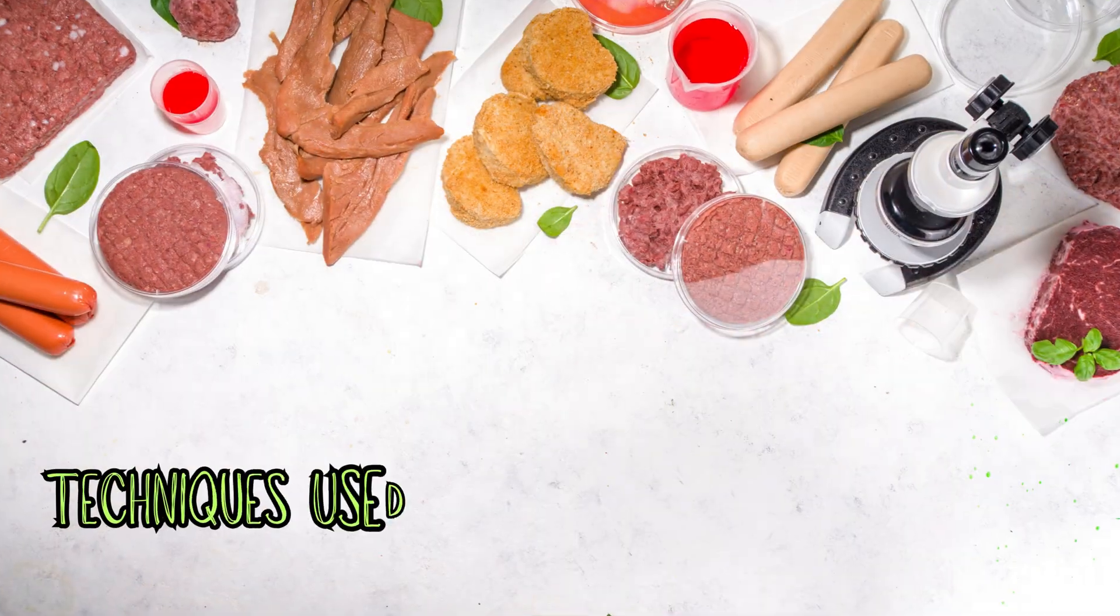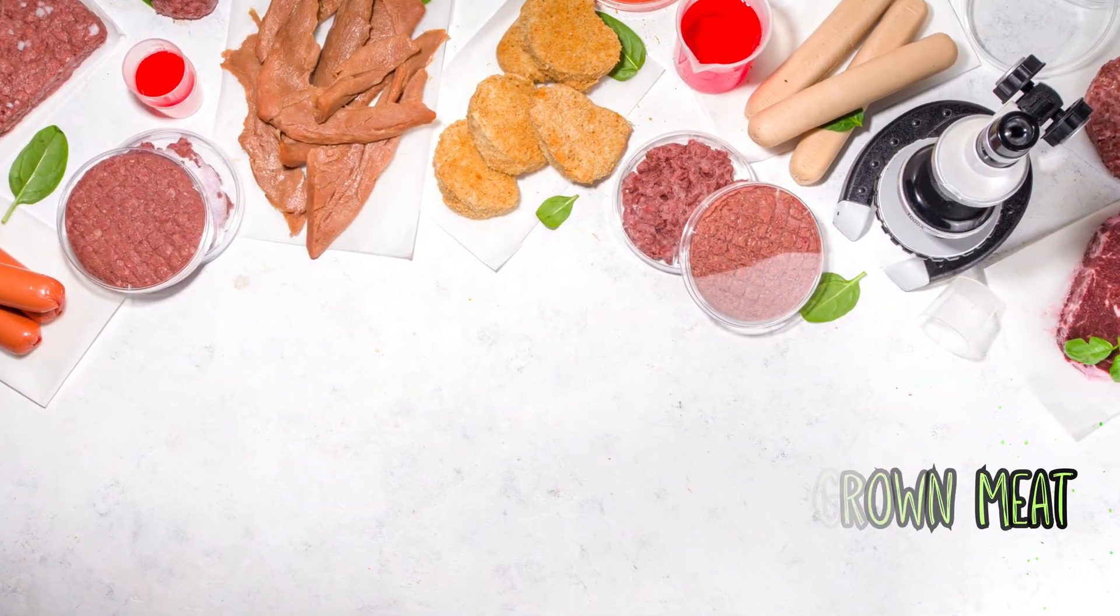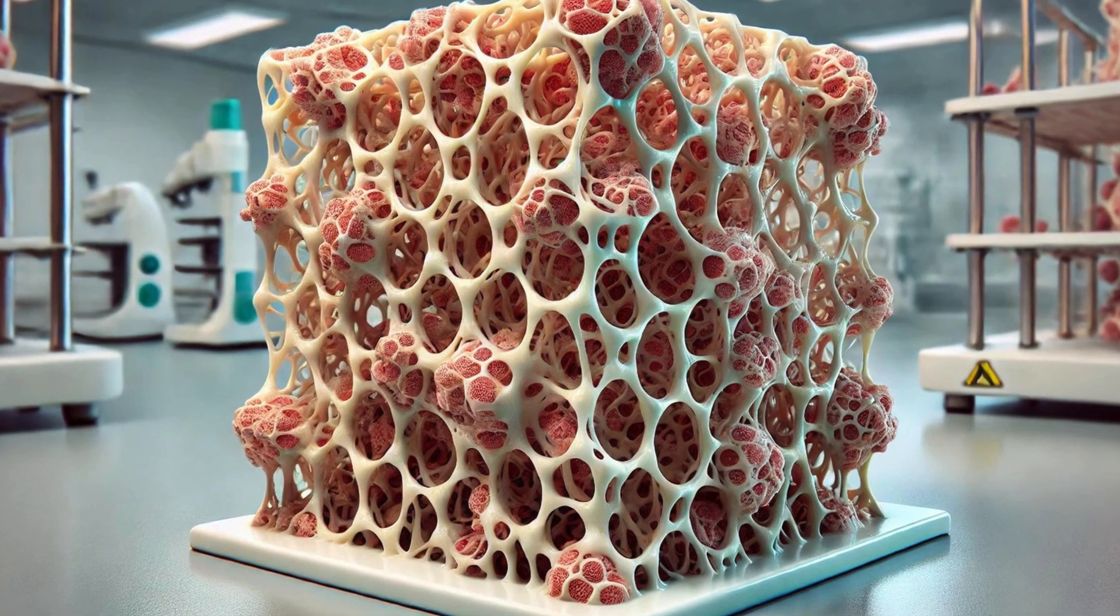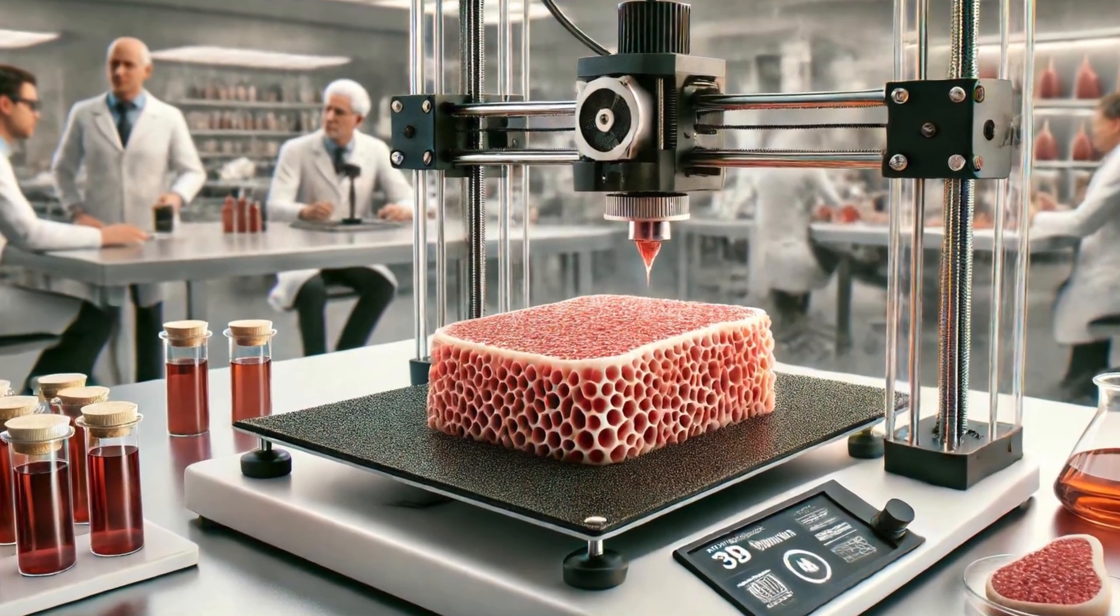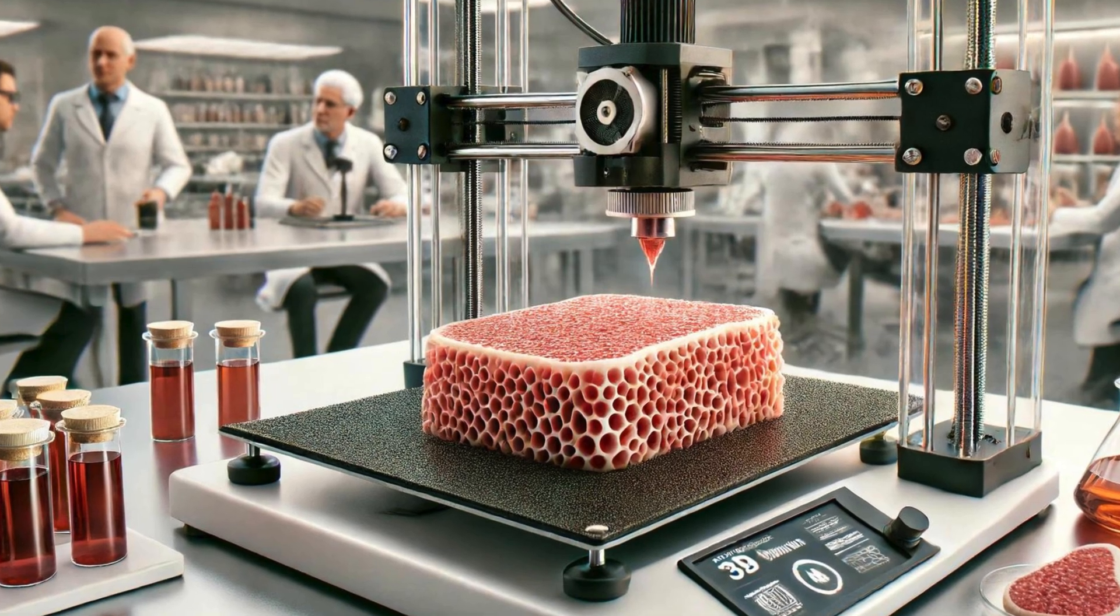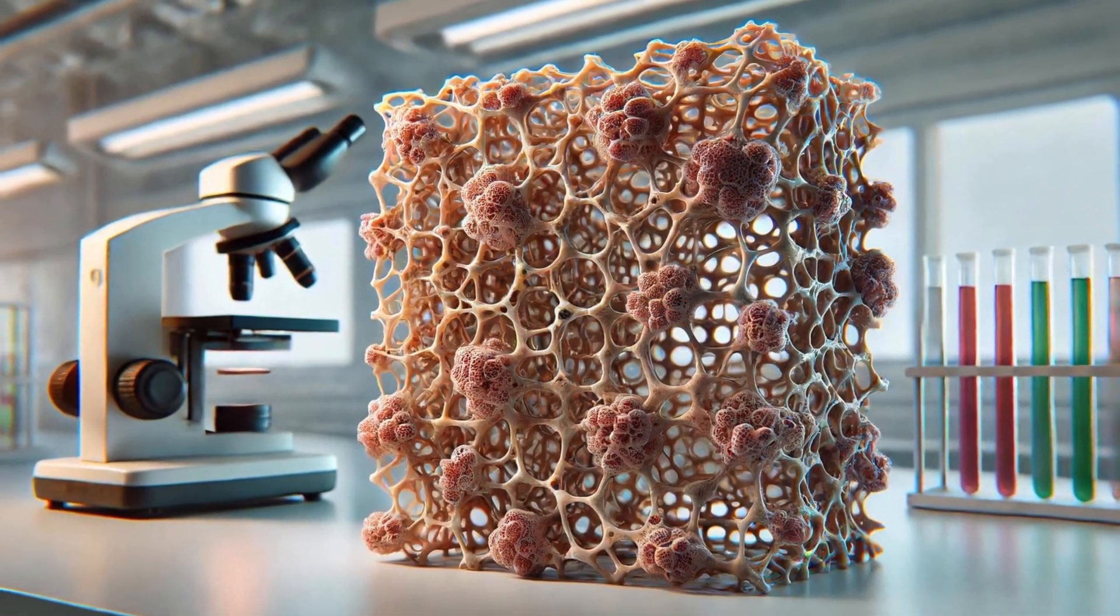Techniques used in producing lab-grown meat. Several advanced techniques are used to produce lab-grown meat. Scaffolding: Using biodegradable materials to create a framework for cells to grow on, forming complex tissue structures.